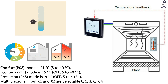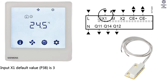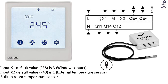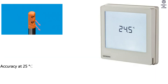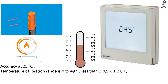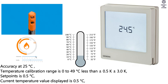Multifunctional inputs X1 and X2 are selectable. Input X1 default value P38 = 3: window contact. Input X2 default value P40 = 1: external temperature sensor. Built-in room temperature sensor measuring range: 0 to 49°C. Accuracy at 25°C: temperature calibration range 0 to 49°C, less than ±0.5K; ±3.0K. Set points resolution: 0.5°C. Current temperature value displayed resolution: 0.5°C.